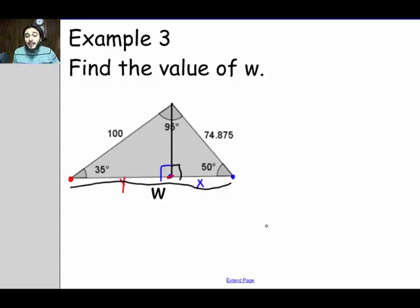So to find x, you could see that this will be the hypotenuse. And I'm using 50 as the reference angle in this right triangle here. This will be the hypotenuse and x will be the adjacent. So x will be equal to the cosine of 50 times 74.875.